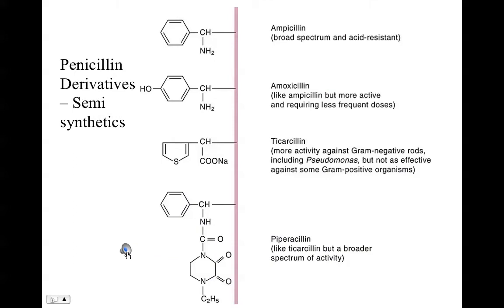Here are some additional examples of penicillin derivatives — the semi-synthetics like ampicillin and amoxicillin. The others, ticarcillin and piperacillin, are used for either narrow-spectrum activity, such as ticarcillin against gram-negative bacteria, or piperacillin, which has a broader spectrum of activity. They are all types of semi-synthetic derived penicillins with varying effectiveness, often chosen for their spectrum of activity or the type of target body system.